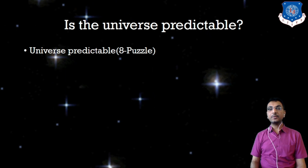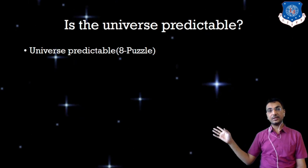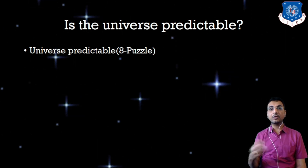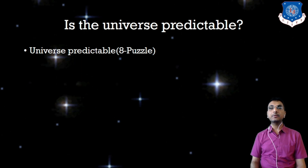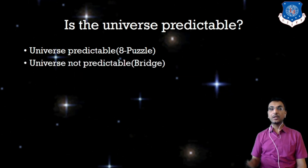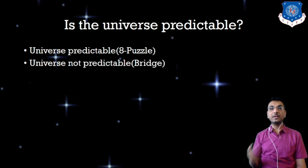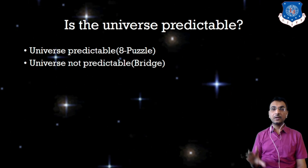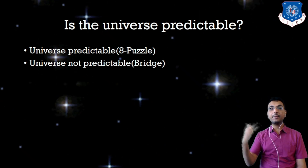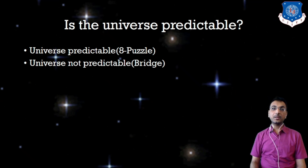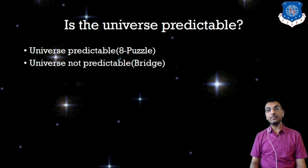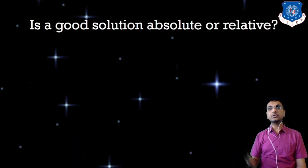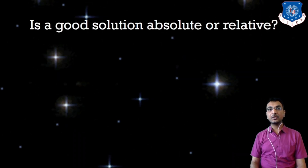The third characteristic is: is the universe predictable? In the eight-puzzle, you can judge where the problem state will be after three or four operations — the universe is predictable. In the case of Bridge (like Teen Patti), whatever we are playing totally depends on the cards of other players, so the universe is not predictable.